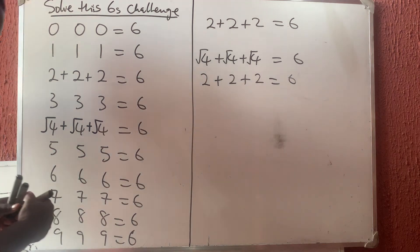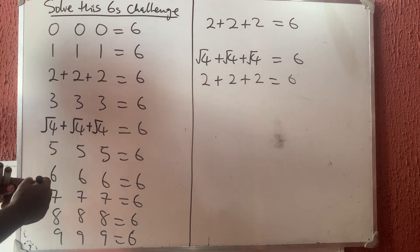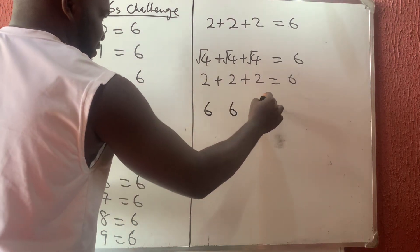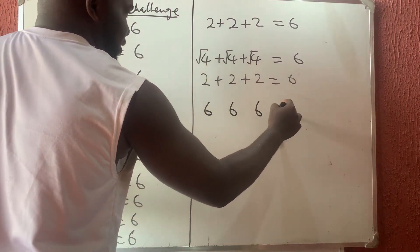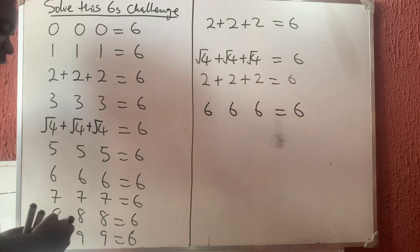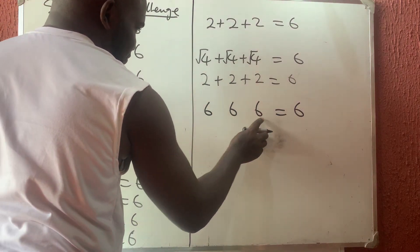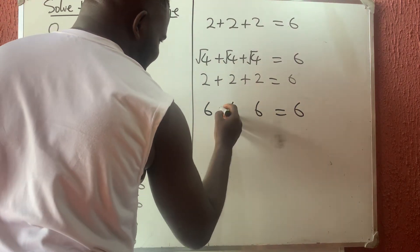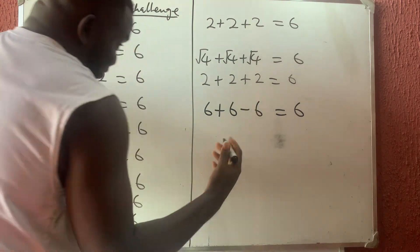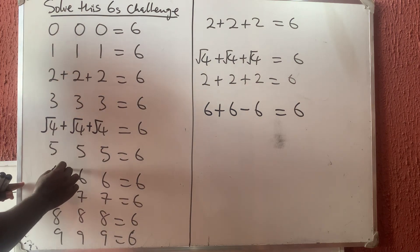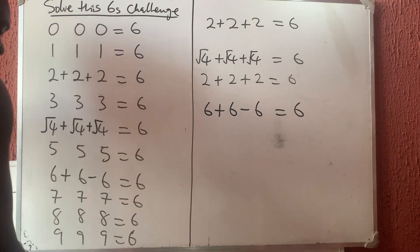Now let's use six: six, six, six to give us six. What mathematical operation can we do? Six plus six is twelve, then minus six gives us six. So if I put plus here and minus here, I automatically get six. The operation is plus and minus.